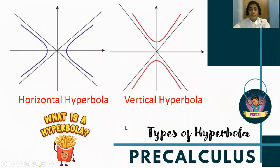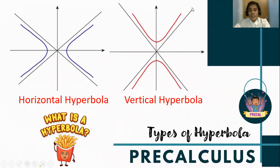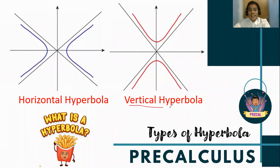What are the two types of hyperbola? The first is called the horizontal hyperbola — that is when the principal axis is a horizontal line. Horizontal hyperbolas have branches to the left and right. The second is the vertical hyperbola, which has a vertical principal axis, and these are curves with branches that open upward and downward.